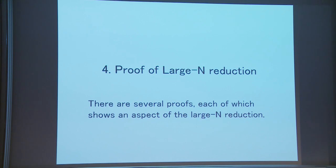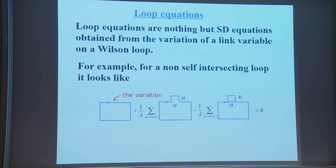Now I want to introduce a proof of the eigenvalues reduction. There are several proofs, each of which shows an aspect of the eigenvalues reduction. The first is the loop equation. The loop equations are nothing but Schwinger-Dyson equations obtained from the variation of a link variable on a Wilson loop.